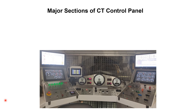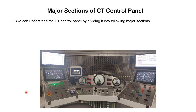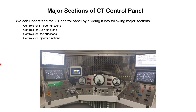Now we will understand the major sections of this control panel installed in the coil tubing control cabin. We can divide it into the following major sections: controls for stripper functions, controls for BOP functions, controls for reel functions, controls for injector functions, controls for power pack, and data acquisition system and emergency shutdown systems with their respective panels and gauges.